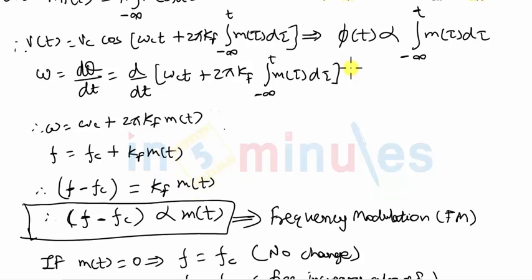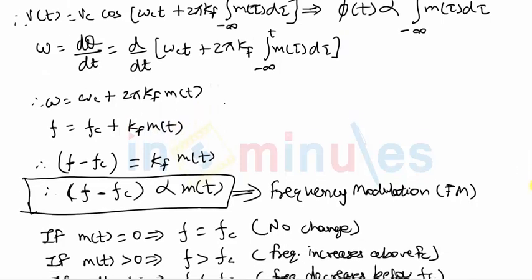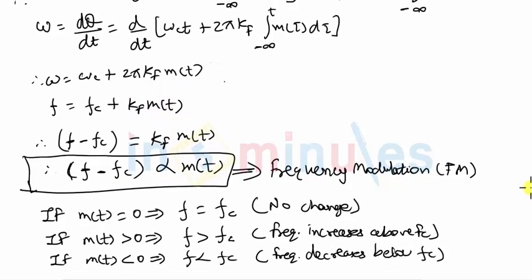So if the phase is in proportion to the integration of the modulating signal, then automatically the frequency will be in proportion to the modulating signal amplitude directly, and hence we will obtain frequency modulation. Thank you.